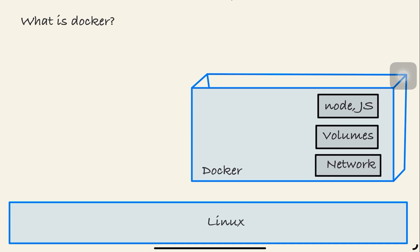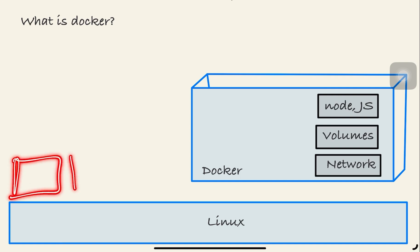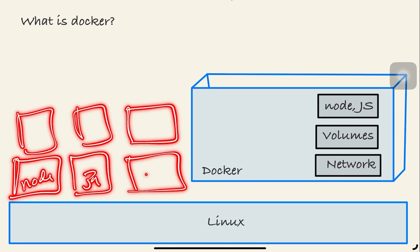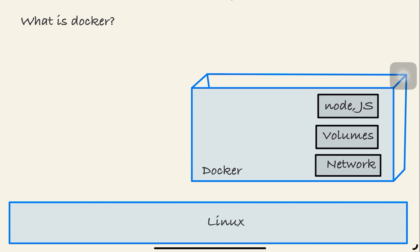You might be wondering about Linux and why there's empty space in the diagram. All Docker containers must run on top of a Linux instance — that is mandatory. On top of that Linux instance we can run as many Docker containers as we want: Node.js, Java, Maven, MySQL, MongoDB — as many applications as needed.